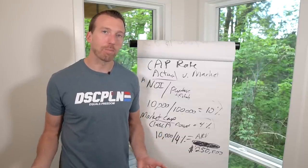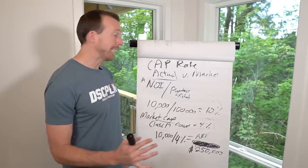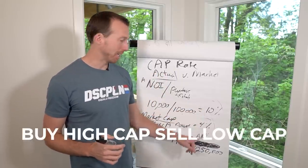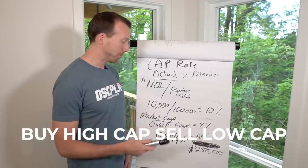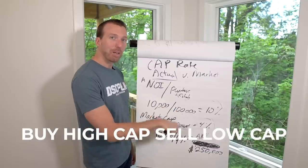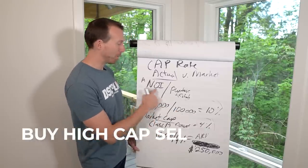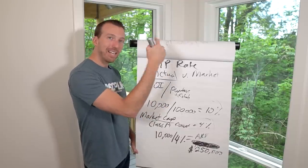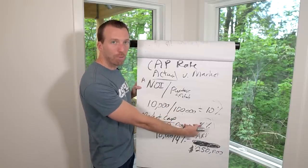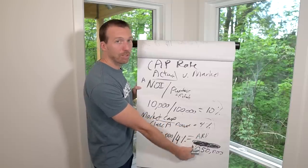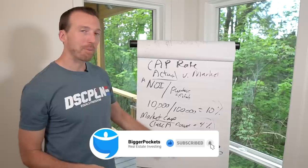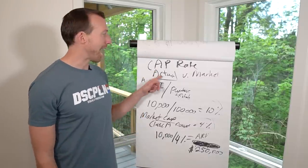The key to getting the best return on your property is buying at a high cap rate and selling at a low cap rate. To do that, you want to increase your NOI and reduce your expenses. When you increase rents and reduce expenses, your NOI gets bigger. Your multiplier changes based on the quality of the property and the market you're in, and that raises your value. There's a big difference between actual cap rate and market cap rate — keep that in mind.